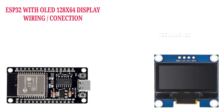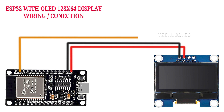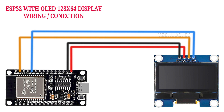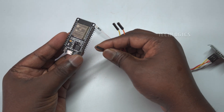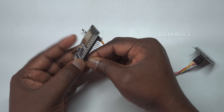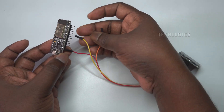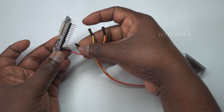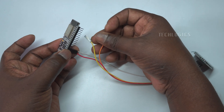First, connect the 128x64 OLED display to the ESP32 by aligning the pins correctly. The OLED module typically has four pins: VCC, GND, SCL, and SDA. Start by connecting VCC to the 3.3V pin on the ESP32, as most OLED modules operate on 3.3V. Next, connect GND from the OLED to the ESP32's GND pin. Ensure these power connections are secure, as they supply the required voltage for the OLED to function.